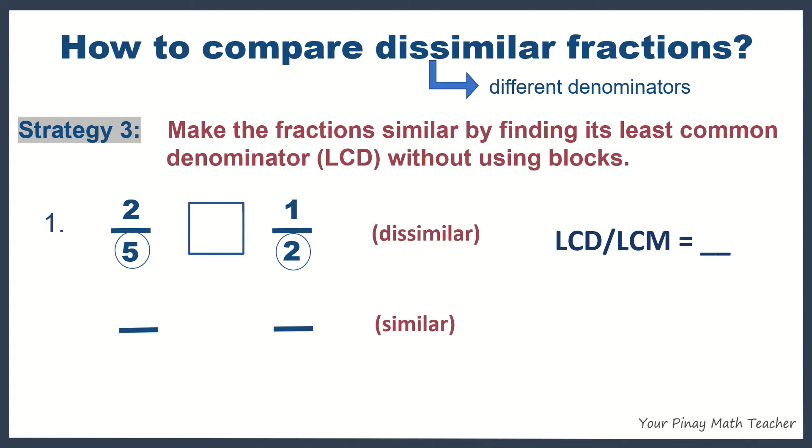So, the first few multiples of 5 are 5, 10, 15, 20, and so on. For 2, we have 2, 4, 6, 8, 10, and so on. Based on the list, our least common multiple is 10.